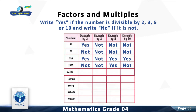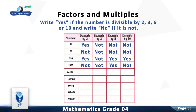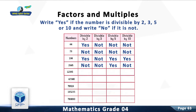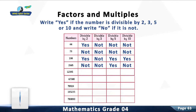Question 4: Check divisibility of the number by 2, 3, 5, and 10. You are right. It is not divisible by 2. It is not divisible by 3. It is divisible by 5. It is not divisible by 10.